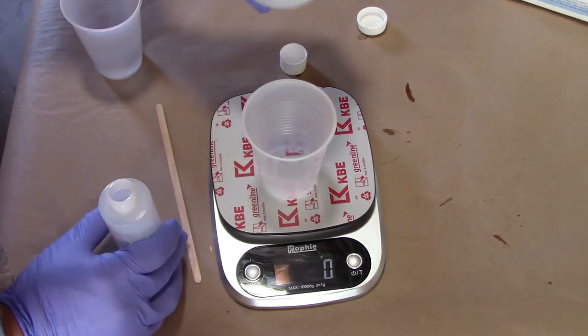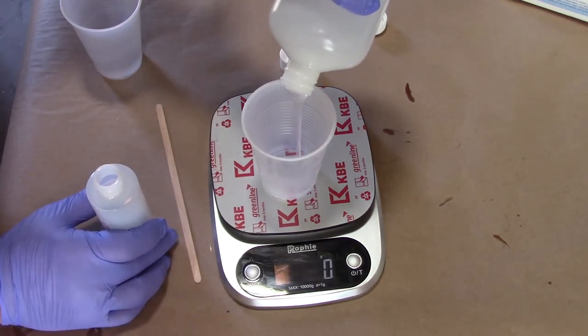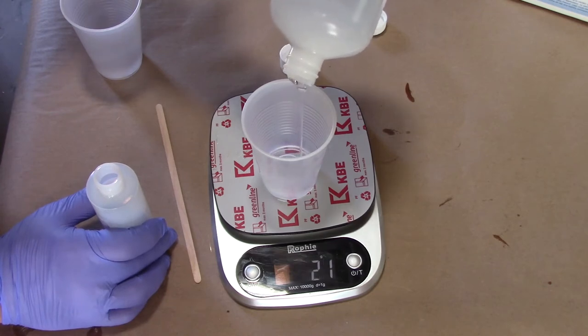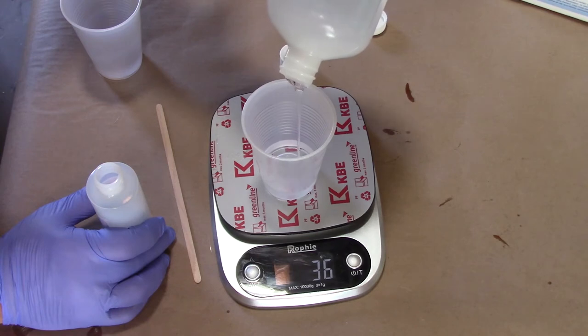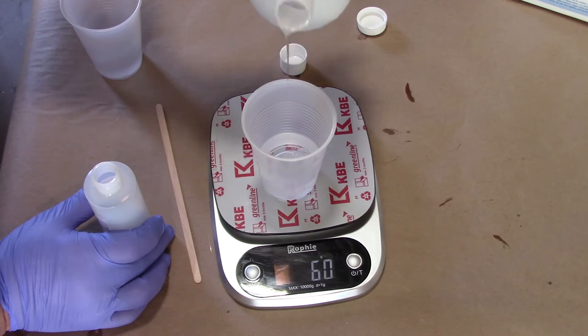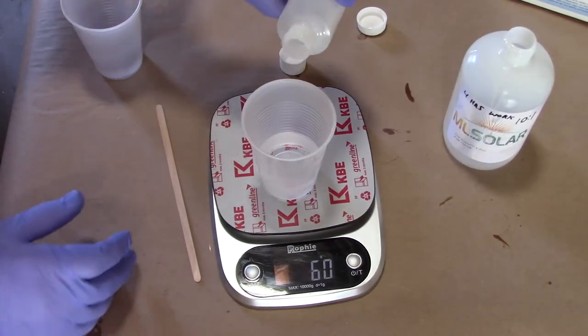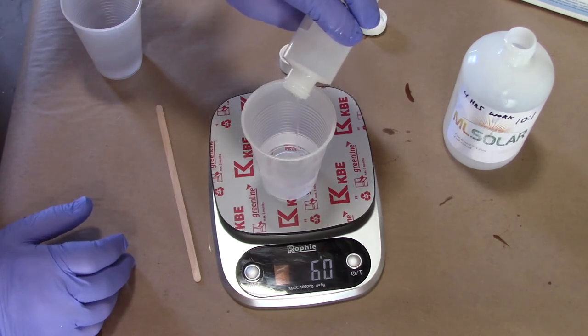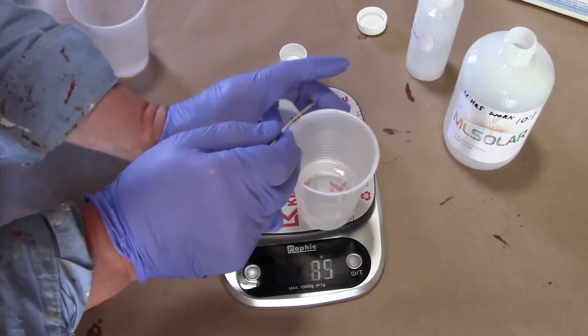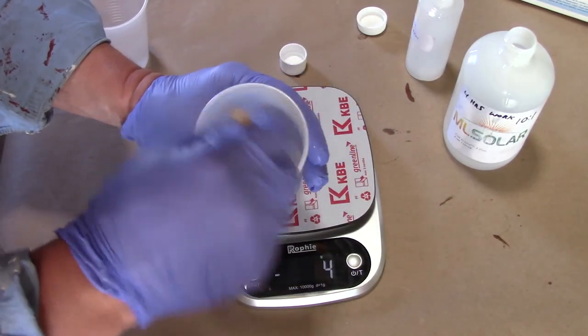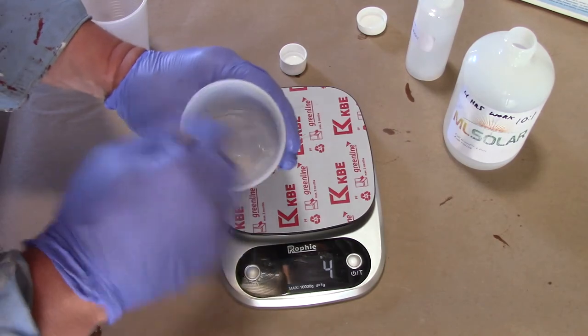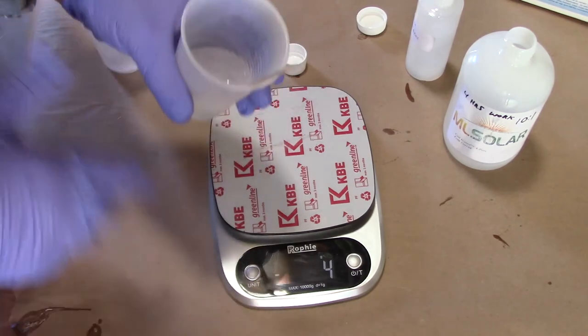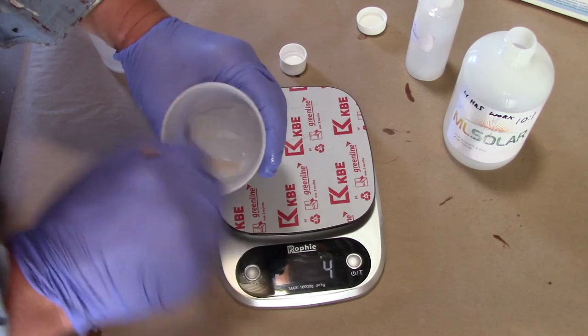So I found the best ratio is 60 grams of the silicon. And then 10% of that is going to be 6 grams. So let's carefully pour this to 60. Okay, there we go at 60 grams. Now we're going 6 grams of the catalyst. Okay. Give this a very thorough, vigorous mix. The manufacturer recommends that you mix this for three minutes, pour it into a separate cup, and then mix that for another couple minutes. And then we're going to pour this directly into the vat.